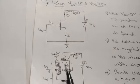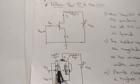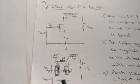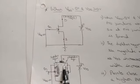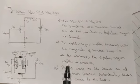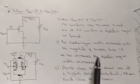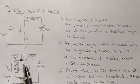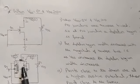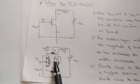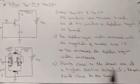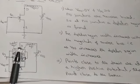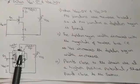The channel narrows as VDS increases, reducing electron flow. The depletion region width increases with the magnitude of reverse bias — as VDS increases, the depletion region grows and the channel becomes narrow. Points close to the drain are at a higher positive potential than points close to the source, resulting in a positive resistance effect.